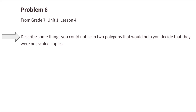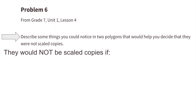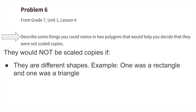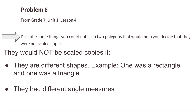Number six: describe some things you could notice in two polygons that would help you decide they were not scaled copies. They would not be scaled copies if they were different shapes — for example, one was a rectangle and one was a triangle. They would also not be scaled copies if they had different angle measures.